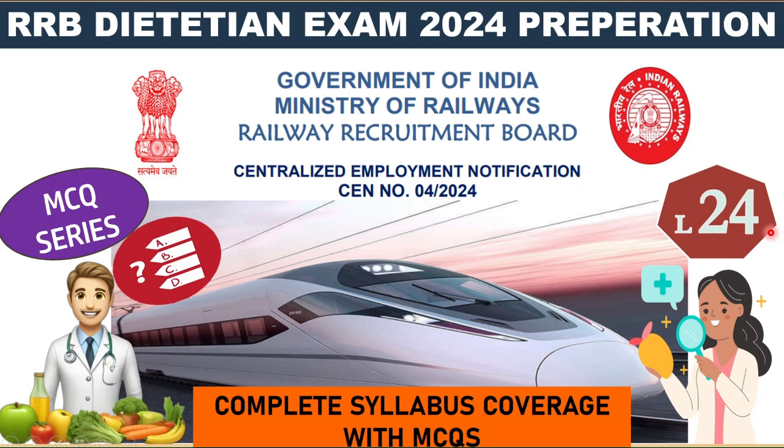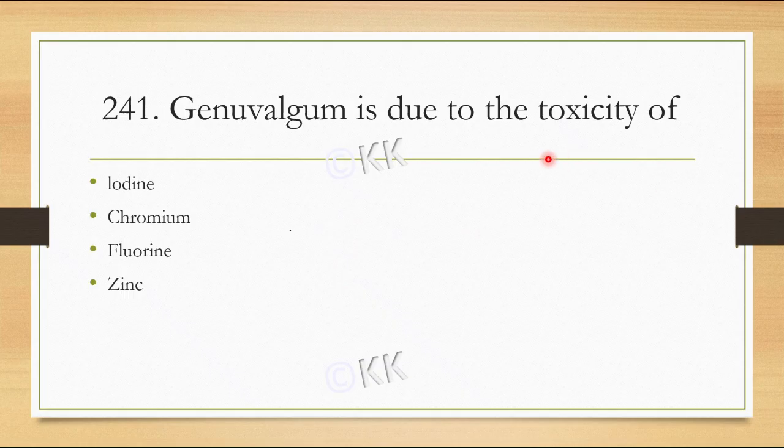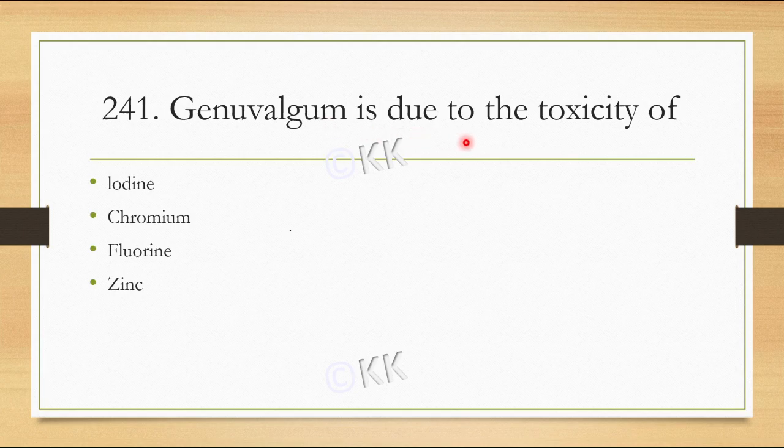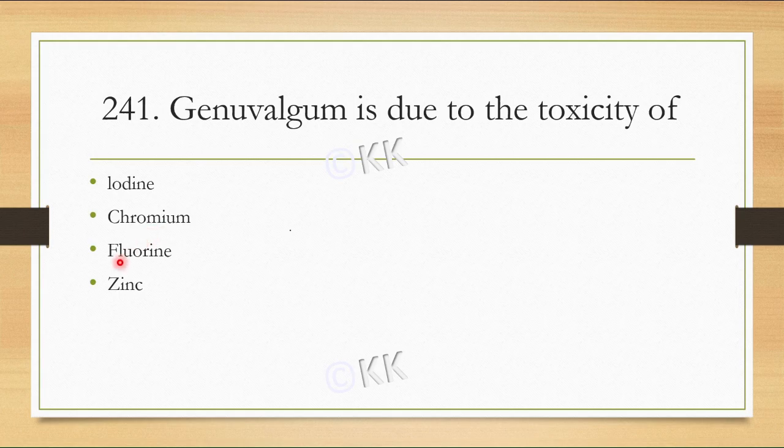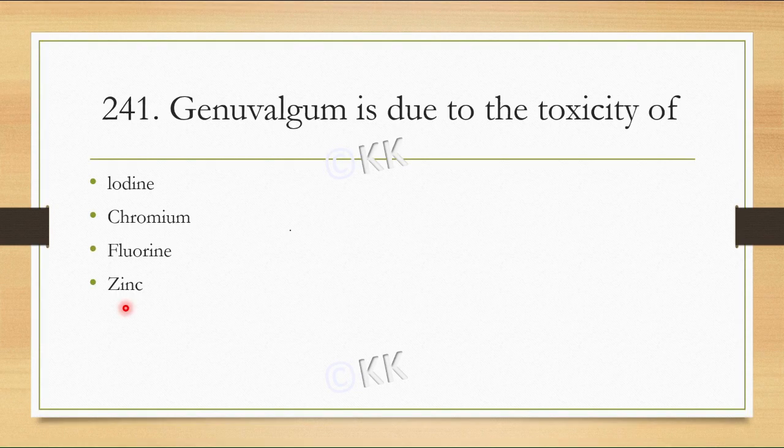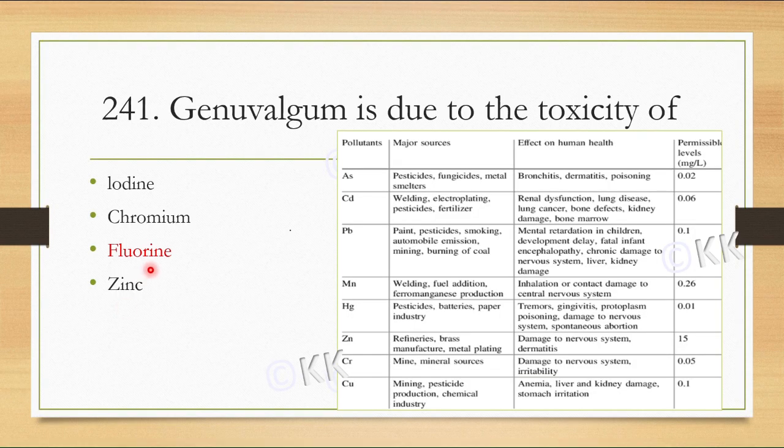Hello everyone. Welcome to part 24 of our MCQ discussion series. Let's start with today's first question. Genuvalgum is due to the toxicity of: option A iodine, option B chromium, option C fluorine, option D zinc. The correct option is fluorine. Fluorine toxicity is seen by Genuvalgum.